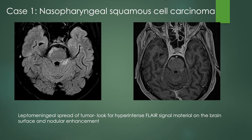Case one: this is a patient with a history of nasopharyngeal squamous cell carcinoma. You're looking for hyperintense FLAIR signal on the surface of the brain, especially if you see it with nodular enhancement. On this FLAIR sequence, we see subtle hyperintensity along the surface of the pons and along the cerebellum. On the post-contrast images, we can see subtle nodular enhancement in these same areas. This was leptomeningeal spread of nasopharyngeal squamous cell carcinoma.